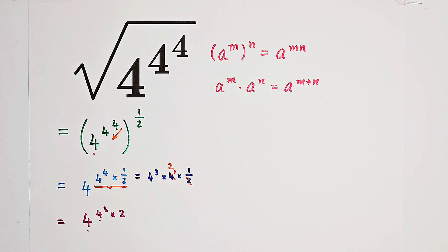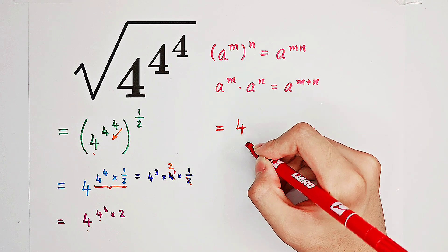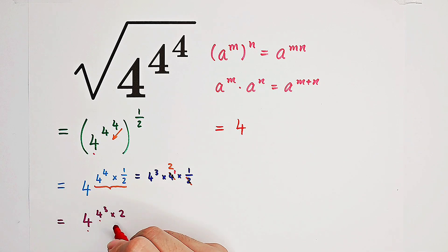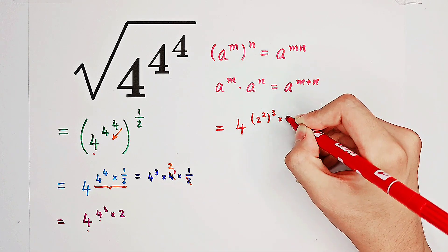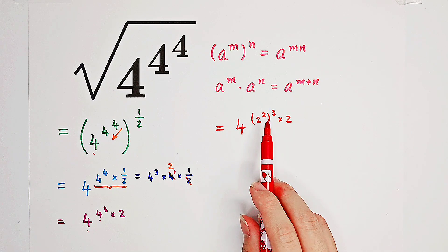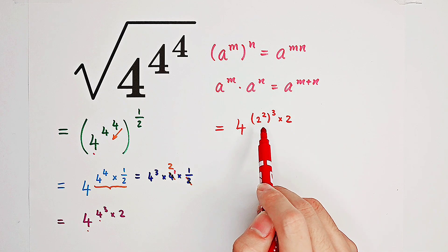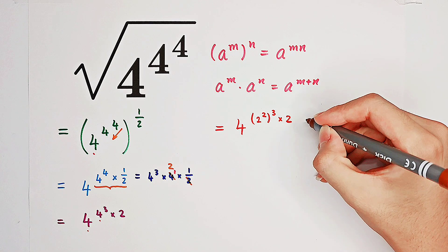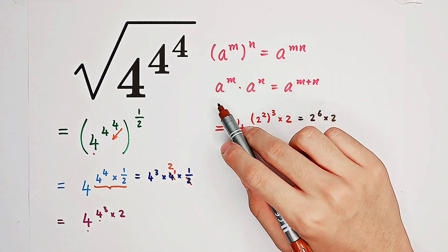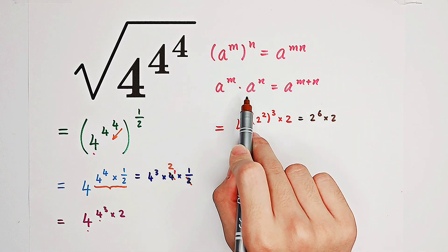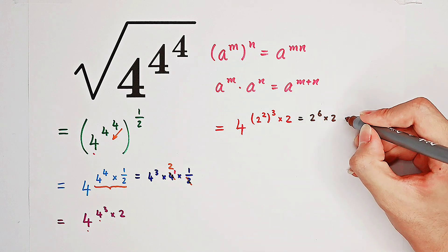So this can also be simplified. Let's deal with the 4 in the exponent: it is 2 squared to the power of 3, times 2. And 2 to the power of 2, all to the power of 3, is 2 to the power of 2 times 3, which is 2 to the power of 6. So this one is 2 to the power of 6, then times 2. According to our second formula, 2 to the power of 6 times 2 is 2 to the power of 6 plus 1, which equals 2 to the power of 7.